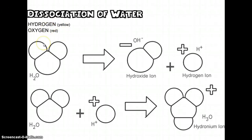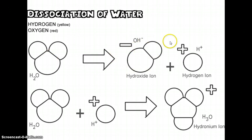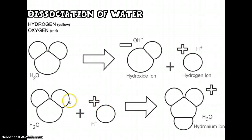So this is the whole process. One to two out of every 10 million water molecules are going to dissociate into a hydroxide, which is OH minus, and a hydrogen ion, which is H plus. These hydrogen ions will then combine with water to make what's called a hydronium ion.